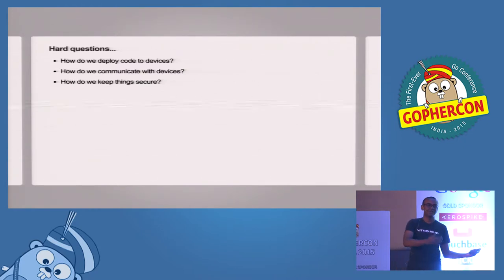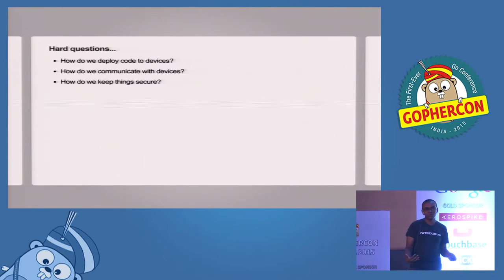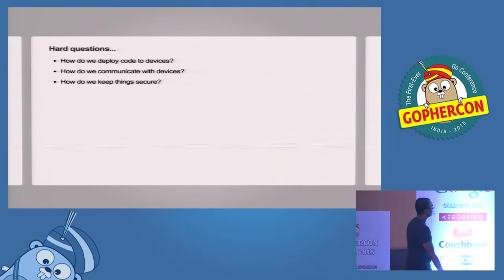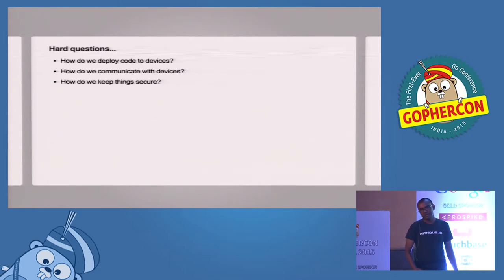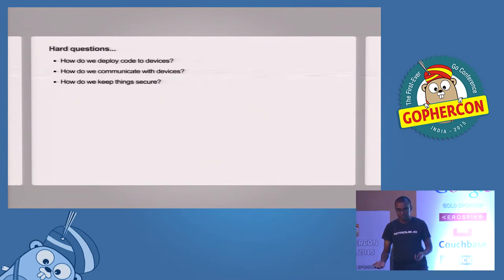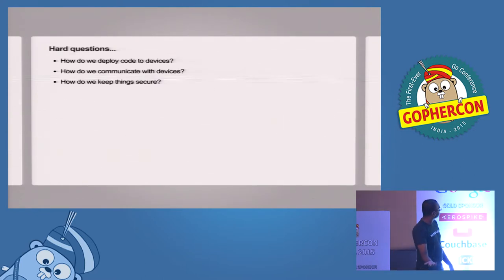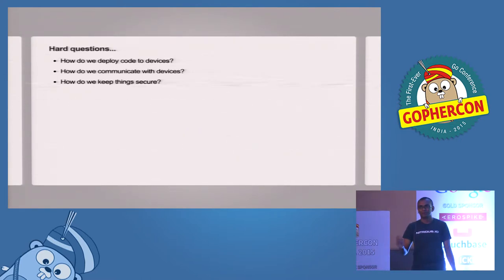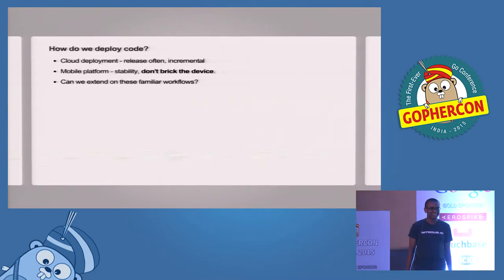I had no clue what was going on — and this was the biggest problem. If it was a web application on the cloud, I could SSH to the server, check the logs, see what went wrong, and post a fix. But in this case I had no physical or remote access to the device. That made me think about how we should be approaching this problem — it's not just about writing the application, it's the process of maintaining it. So I came up with three questions: How do we deploy code to these devices? How do we communicate with these devices? And how do we keep things secure?